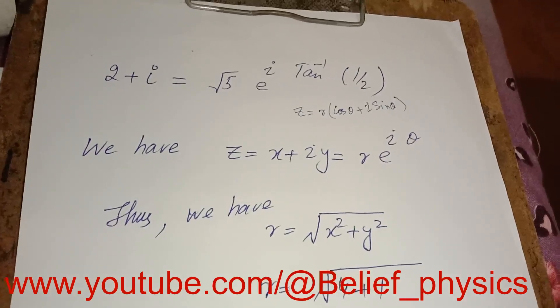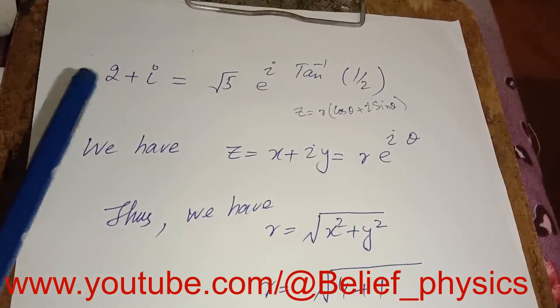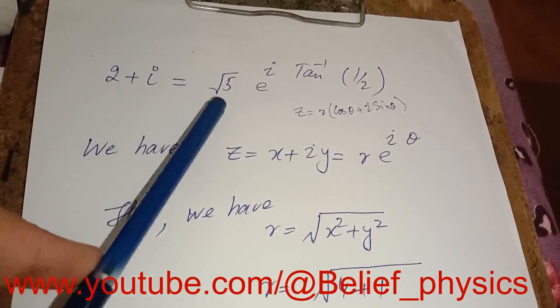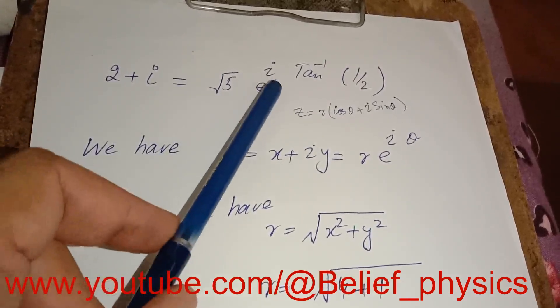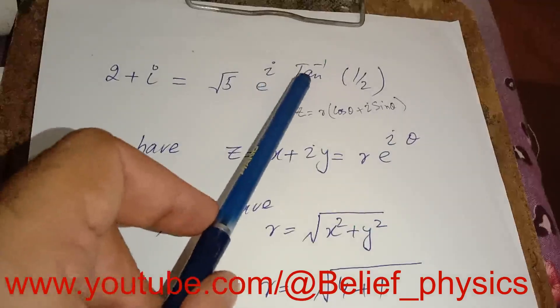Bismillahirrahmanirrahim. Dear students, a question is, we have to prove that 2 plus iota is equal to under root 5 e power iota tan inverse of 1 over 2.